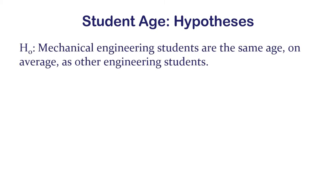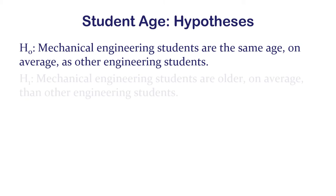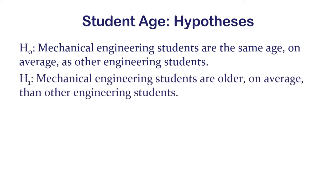The null hypothesis: mechanical engineering students are the same age on average as other engineering students — they come from the same population of ages. The alternative: mechanical engineering students are older on average — they come from a population with a higher mean age.